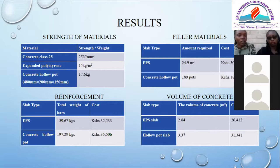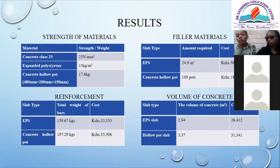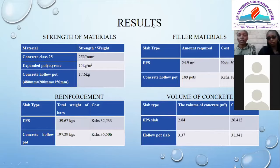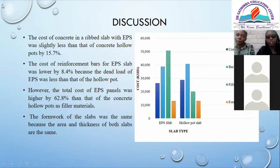The total weight of bars in a concrete hollow pot slab was 197 kg, and its approximate cost was 35,500 shillings. As a filler material, the total area of EPS required for the whole slab was 24.9 square meters, with a total cost of 50,700 shillings. The number of hollow pots required was 189, at a total cost of 18,900 shillings. The volume of concrete for the EPS slab was 2.84 cubic meters at a cost of 26,400 shillings, while for the hollow pot slab it was 3.37 cubic meters at a cost of 31,300 shillings.